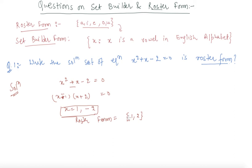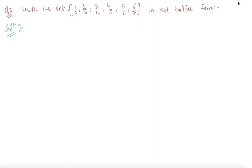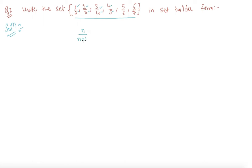Now let's do one more question on set-builder form. Here a set is given to us in roster form and we have to write it in set-builder form. To write any set in set-builder form, the elements should possess a common property. Looking at the fractions in the set, we can see that the numerator is always one less than the denominator in all the fractions — for example, 3/4, 4/5, and so on. So we can express the general element as n/(n+1).